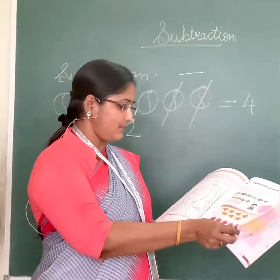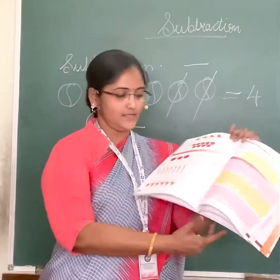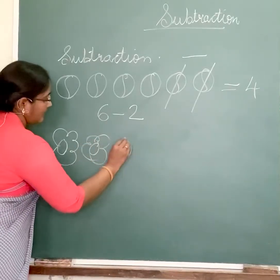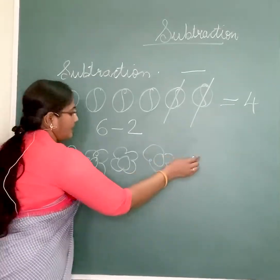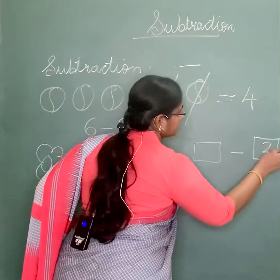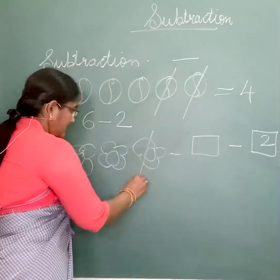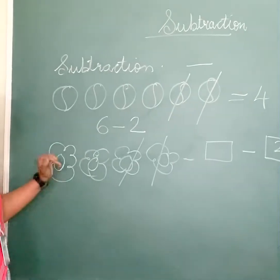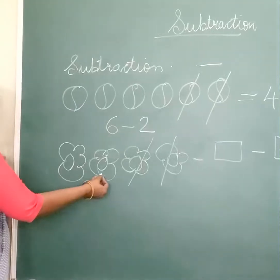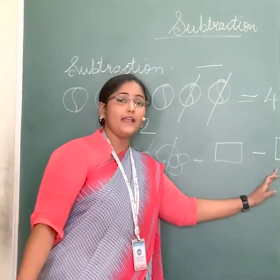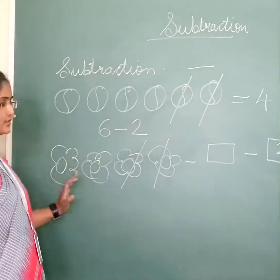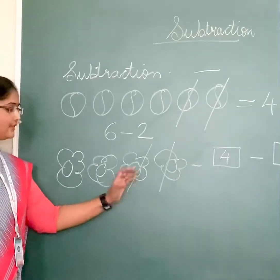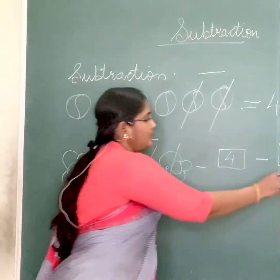So friends, in your book we have some examples like this, and we have to solve these examples. There are 4 objects: 1, 2, 3, 4. Only one number is given — that is minus 2. How many total are there is not given, so to find that out first we count: 1, 2, 3, 4. The number minus 2 is already given, so 4 minus 2. Already 2 are taken away, so let's see how many are remaining: 1 and 2. The answer will be 2.